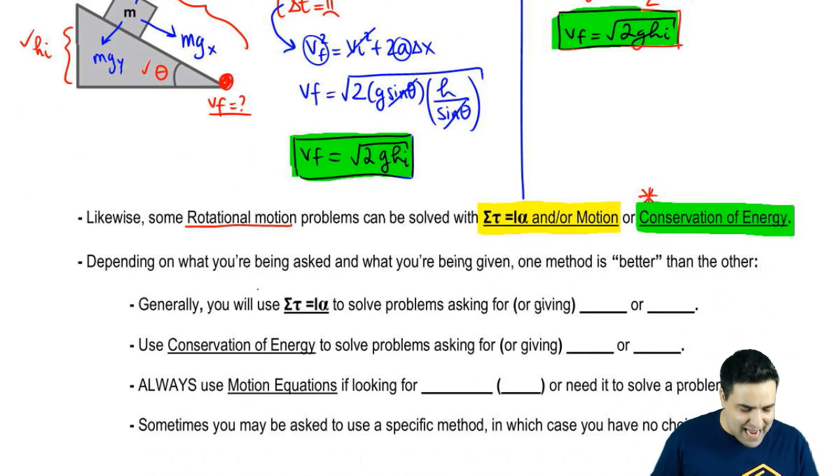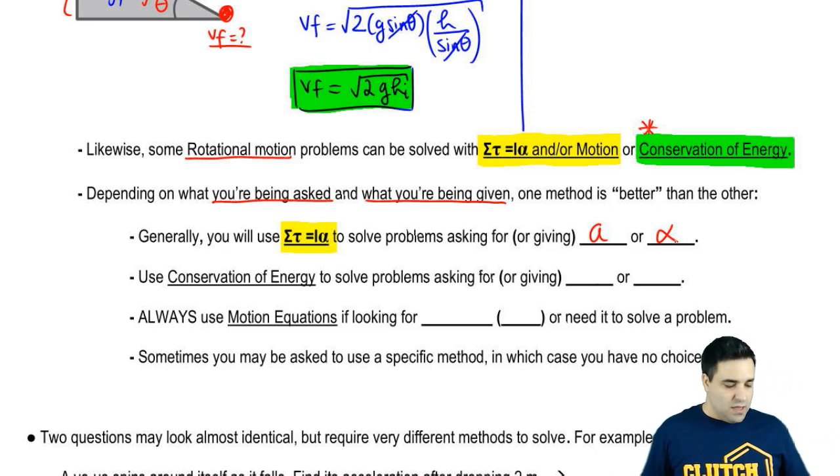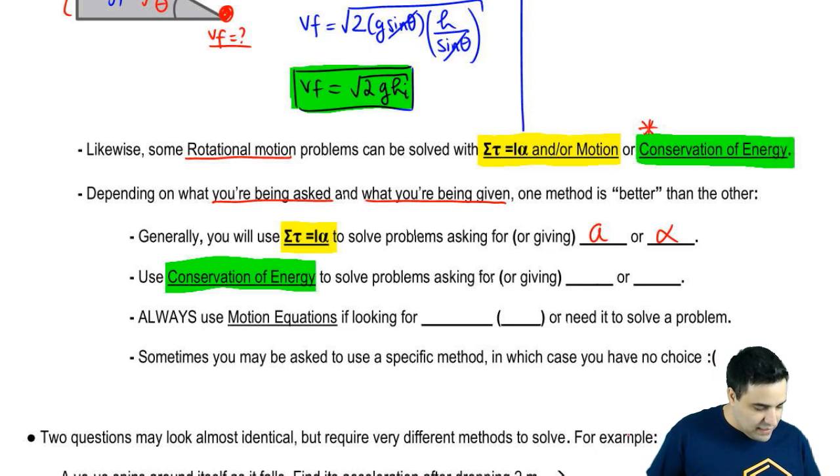But it really depends on what you're being asked or what you're being given. So generally, you will use torque equals I alpha if you're either being asked or given a or alpha. So if I ask for a, you're going to use it. Or if I give you a and ask for something else, you're going to use torque equals I alpha.